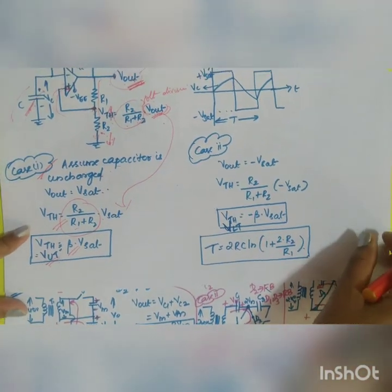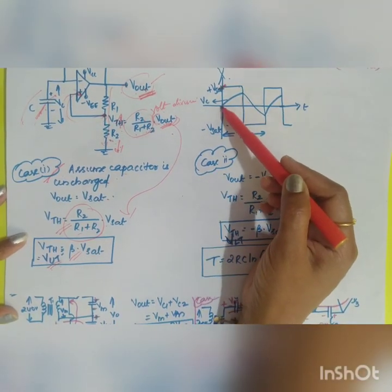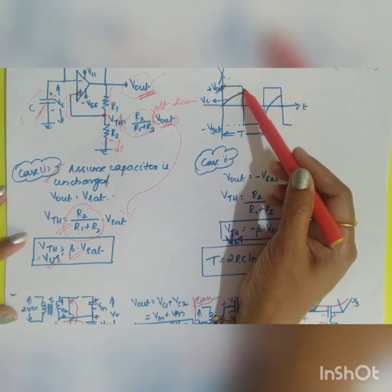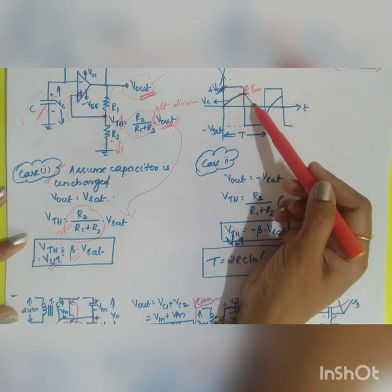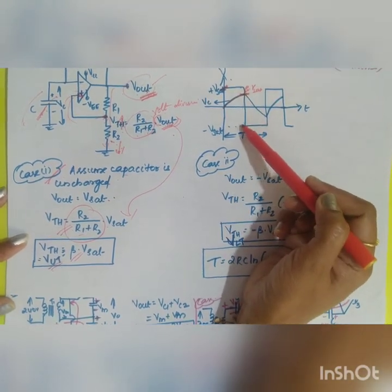Consider this condition. Your output is in plus Vsat. Once you apply the supply, your capacitor starts to charge. Once it reaches beta into plus Vsat, your capacitor starts discharging. The output will switch from Vsat to minus Vsat. Now it will go to your second case.